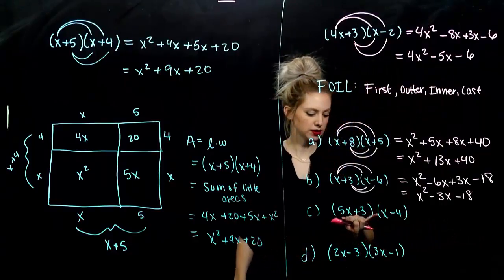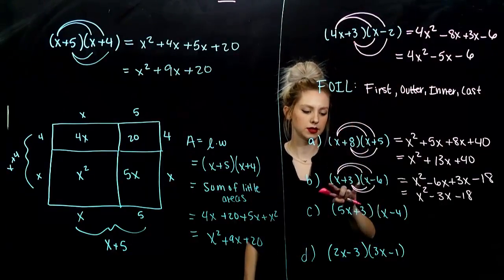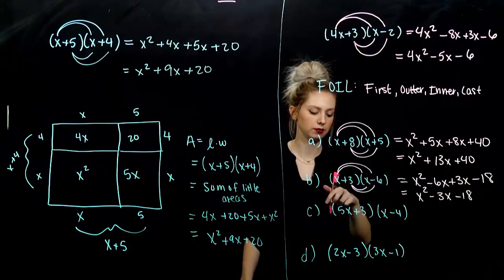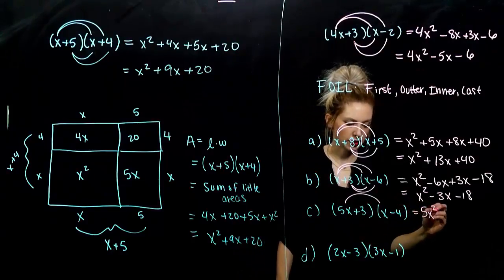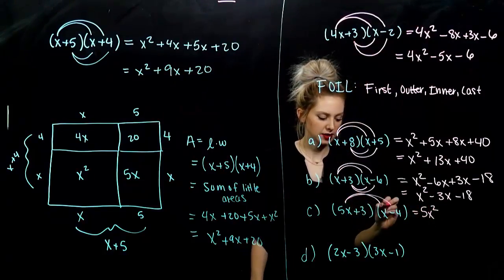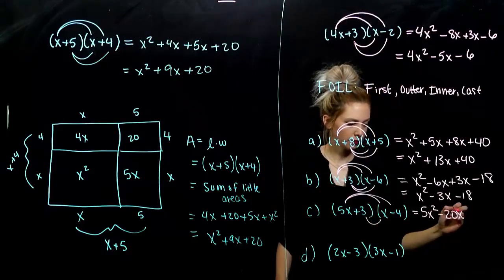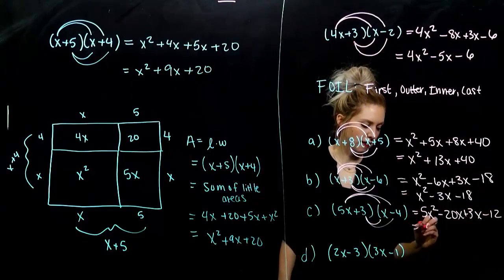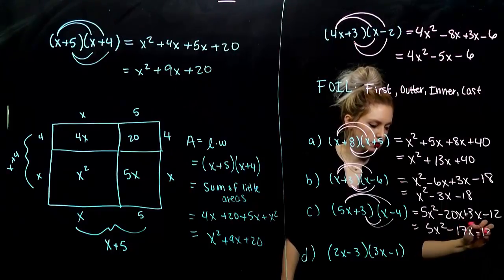For part c, now I have coefficients other than one out on the front. So, in all of these cases that we've seen in your tries, they've been ones, but we've seen other ones. That'll be fine. So, 5x times x, 5x squared. 5x times negative 4, minus 20x. Inner, plus 3x. Last, minus 12. So, we've got 5x squared, minus 17x, minus 12.